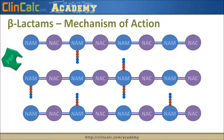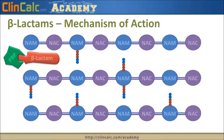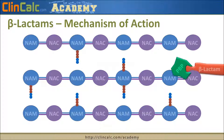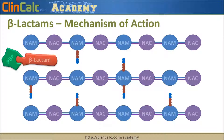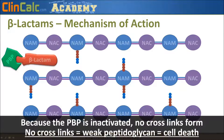The way that beta-lactams work is they bind to the penicillin binding protein. Just like two puzzle pieces that fit together, when the penicillin binding protein tries to create the cross-link, it can't do it because the beta-lactam is bound to the enzyme. Because we've inactivated the penicillin binding protein, there's no cross-link, so the peptidoglycan is a bunch of sheets of paper instead of a brick wall, and that instability will cause cell death.